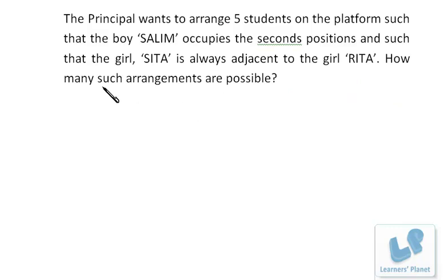Let's see this question. The principal wants to arrange five students on the platform such that the boy Salim occupies the second position, and such that the girl Sita is always adjacent to the girl Rita. How many such arrangements are possible?